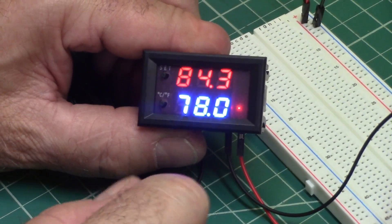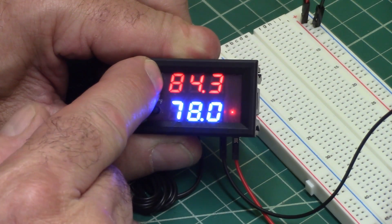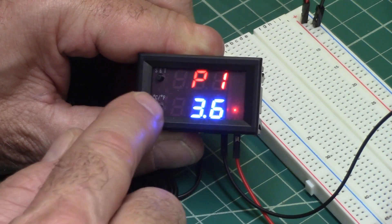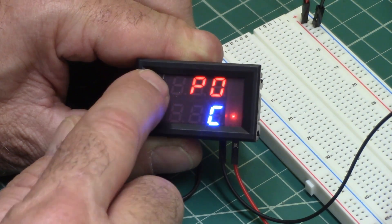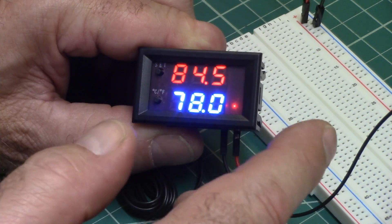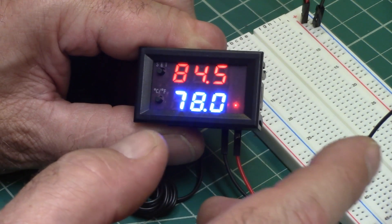Okay, now to get into the programming, you hold this down for five seconds, and you get into programming mode. And P1 is how many degrees it's going to vary before it comes back on.